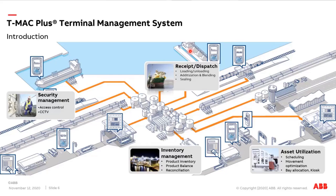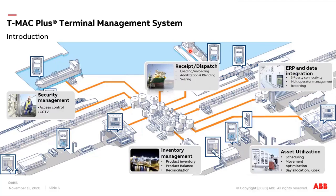We have modules to improve terminal utilization — a module to plan all movements in the terminal: product entry, product exit, or movement between tanks, with optimization of those movements. We also have automatic bay allocation to improve truck movements inside the terminal. TMAC Plus integrates with software data management systems such as PI from OSIsoft or IP21 from AspenTech, and with ERPs — typically SAP, but also Oracle, JD Edwards, Navision, or even in-house ERPs developed by customers.